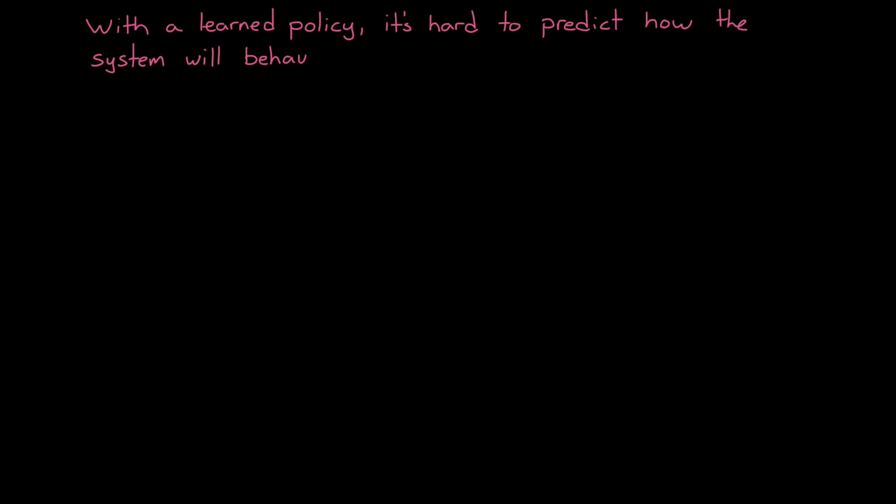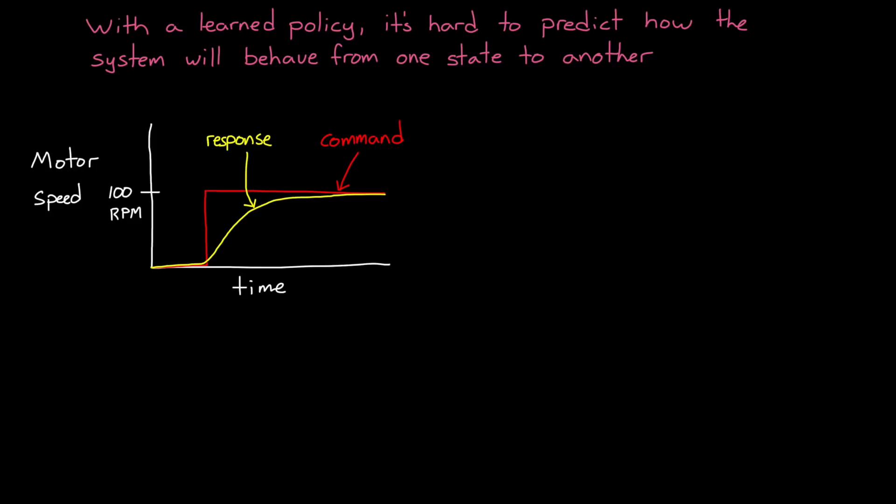For example, if we train an agent to control the speed of an electric motor by having it learn to follow a step input from 0 to 100 RPM, we can't be certain, without testing, that that same policy will follow a similar step input from 0 to 150 RPM. This is true even if the motor behaves linearly. This slight change may cause a completely different set of neurons to activate and produce an undesirable result.